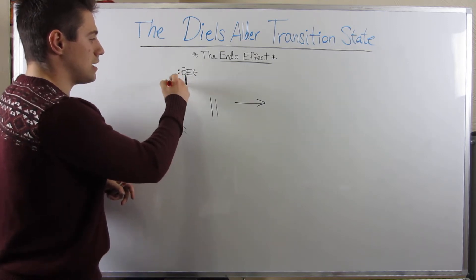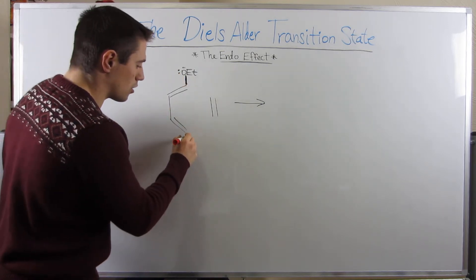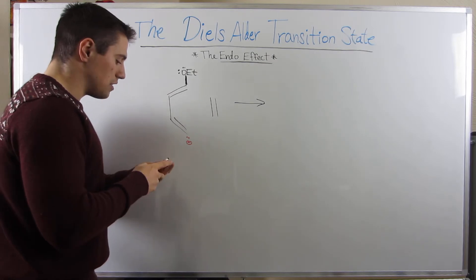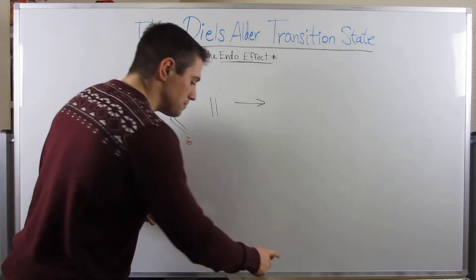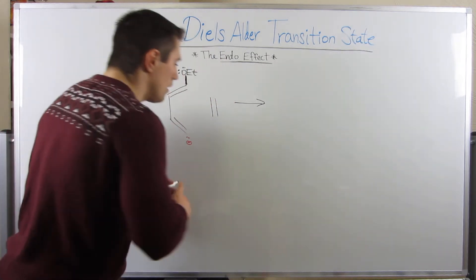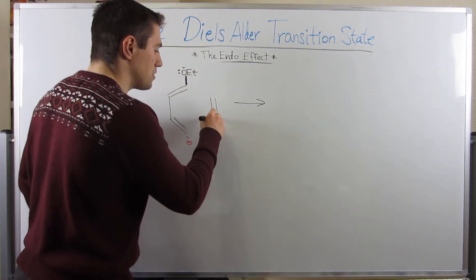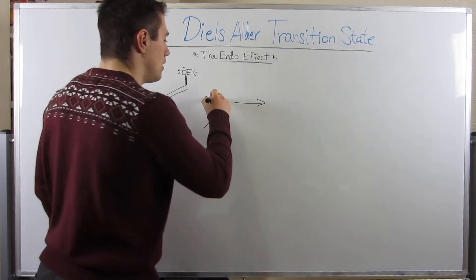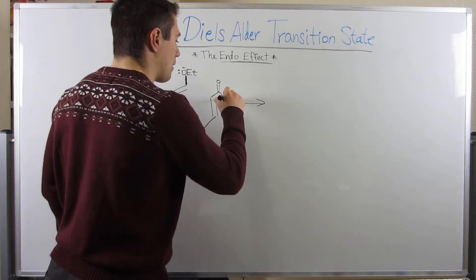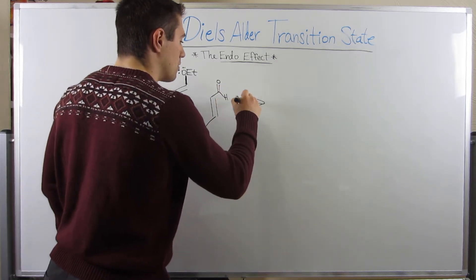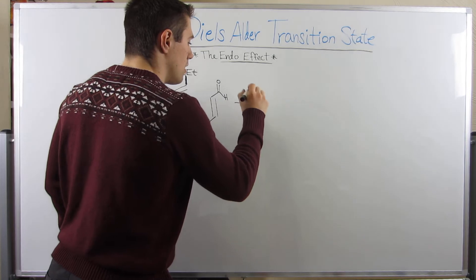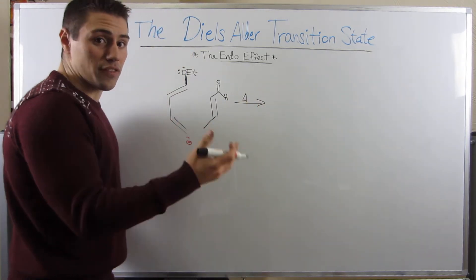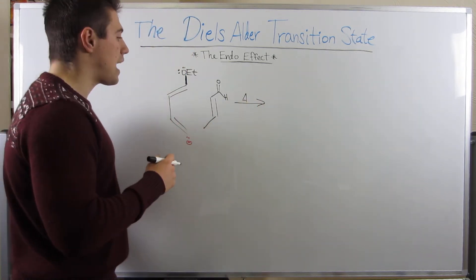If we do the resonance, the negative charge would end up down there. On the other hand, let me draw this diene right here. I'm going to put this in-group methyl group over there and I'm going to draw an aldehyde right there. The heat over the arrow signifies we have a Diels-Alder reaction.